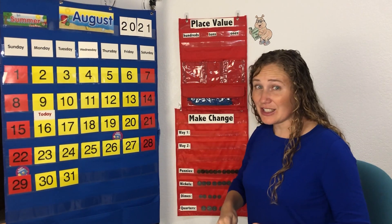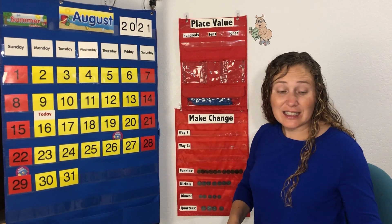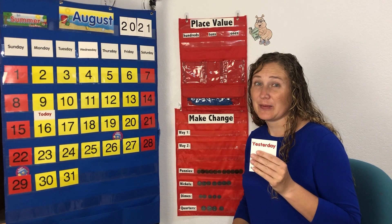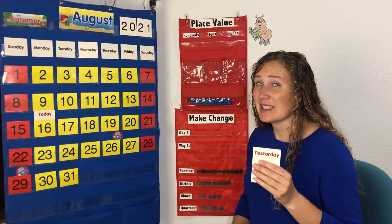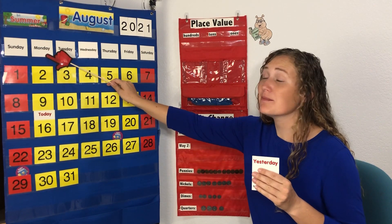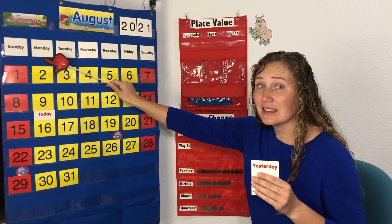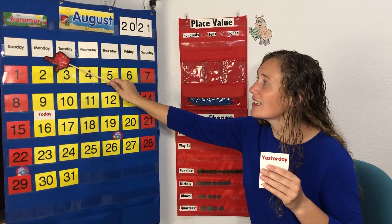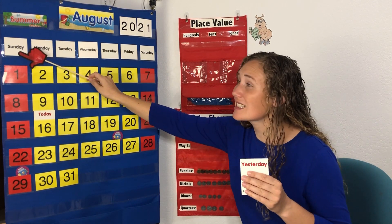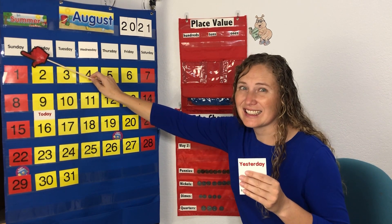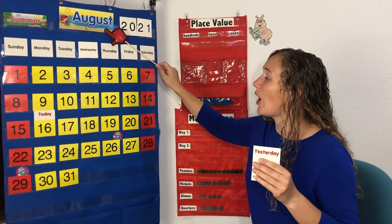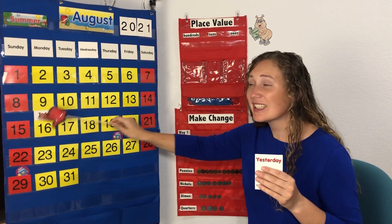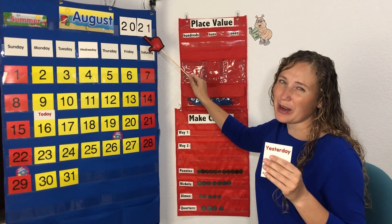Yesterday is the day before today. Today is Monday, so yesterday was Sunday, August 15th, 2021.